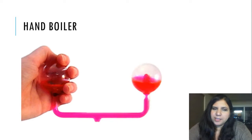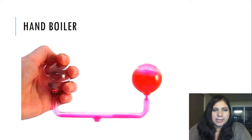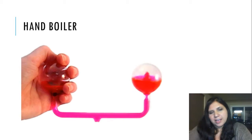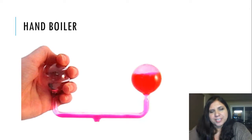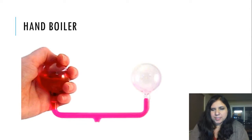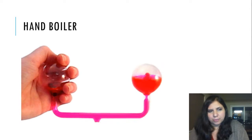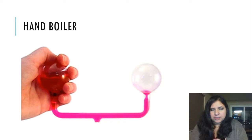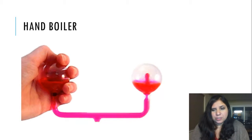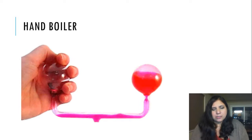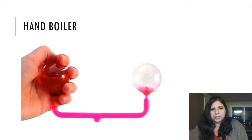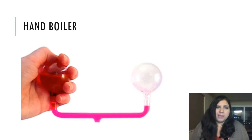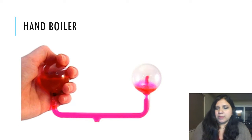Here's the hand boiler that you used in the KMT lab. What you were doing is heating up the air molecules inside the hand boiler. Since there is a direct relationship between temperature and pressure, as you increase temperature, the pressure increased and pushed the liquid to the other side, making it look like the liquid was boiling.